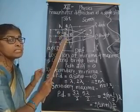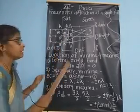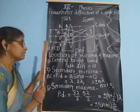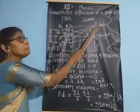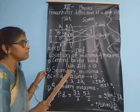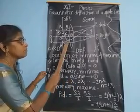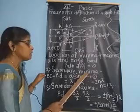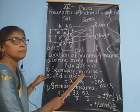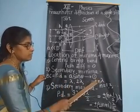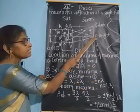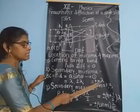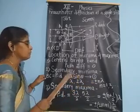So the condition for secondary minimum in diffraction is: if the path difference is an integral multiple of lambda, i.e., a sin theta equals N lambda (where N = plus or minus 1, 2, 3...), then we get secondary minima.